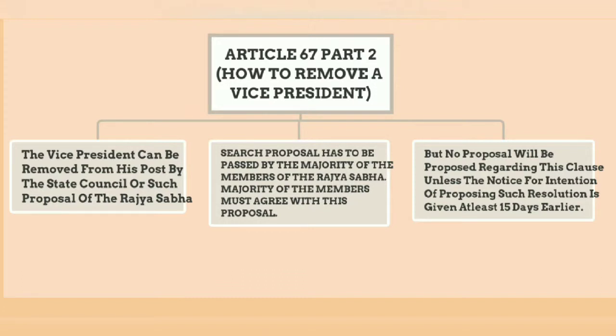First point: the Vice President can be removed from his post by the Rajya Sabha, or a proposal of the Rajya Sabha can also remove the Vice President. Second point: such a proposal has to be passed by the majority of the members of the Rajya Sabha.